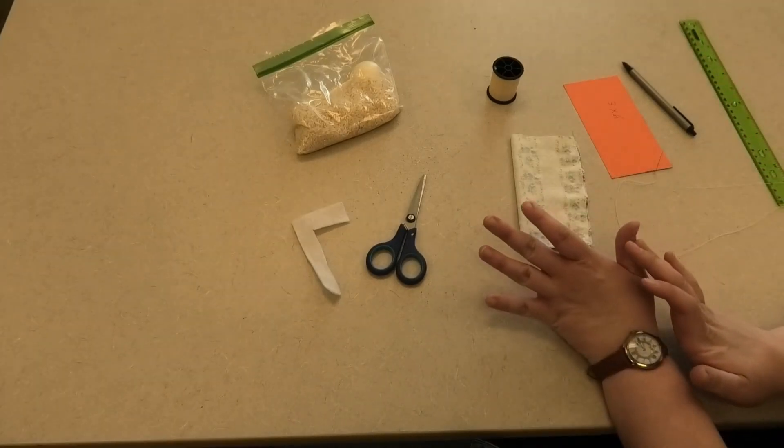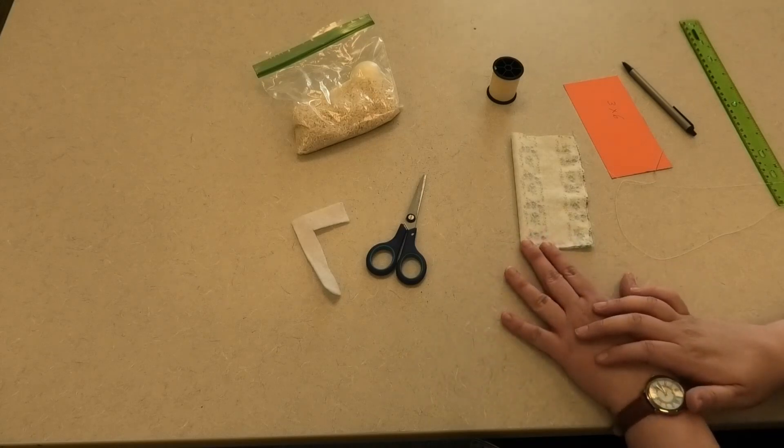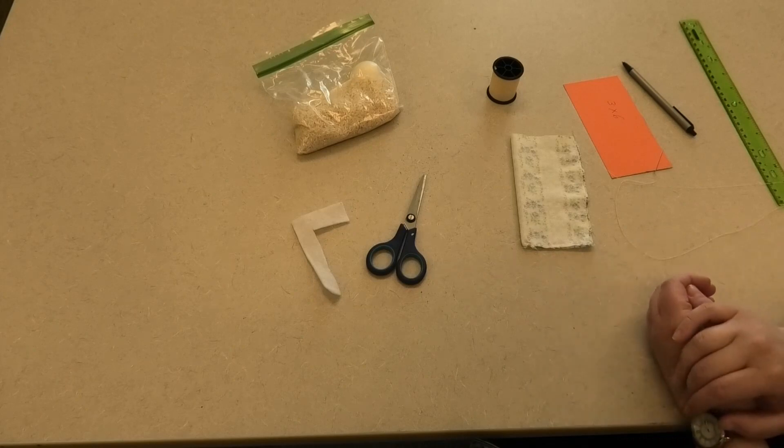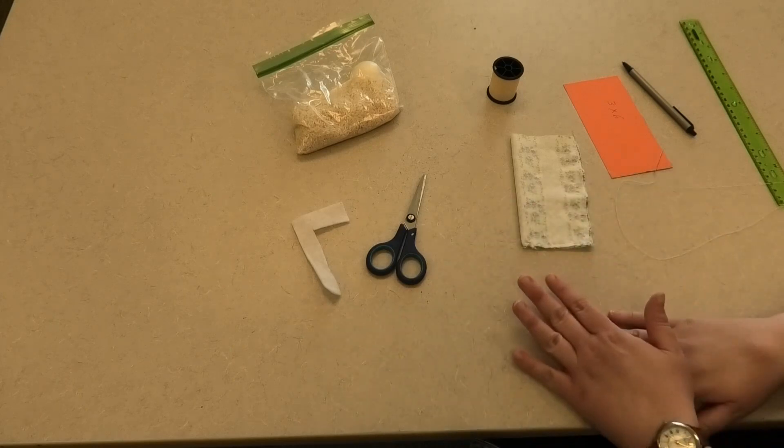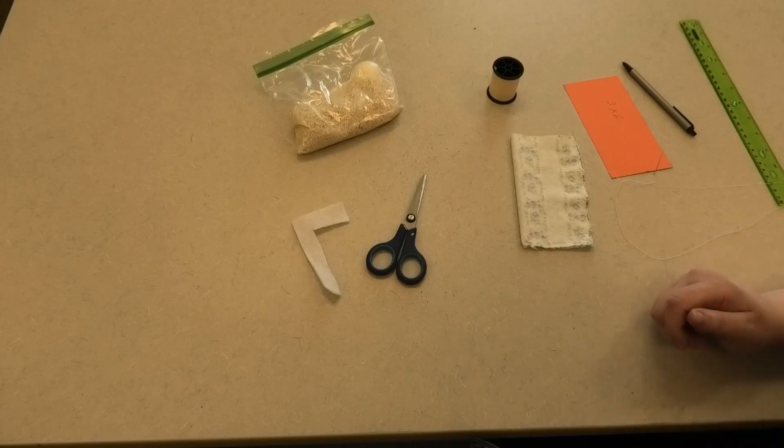If you're not into sewing, it's just not your thing, that's fine. There is a no-sew method for this project as well. Take a clean sock that you lost the partner to and go ahead and fill it with uncooked rice and tie off the end. Then you'll be able to put that in the microwave as well, achieving the same results.